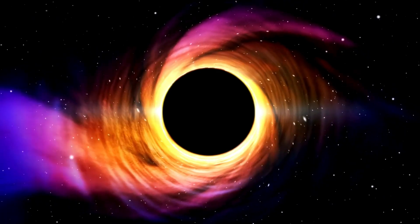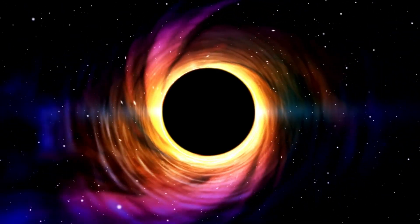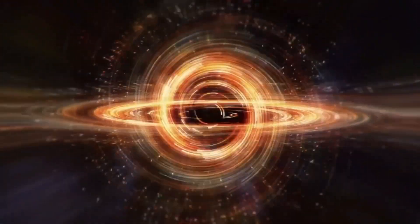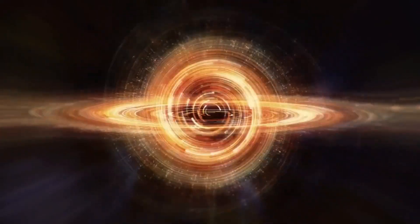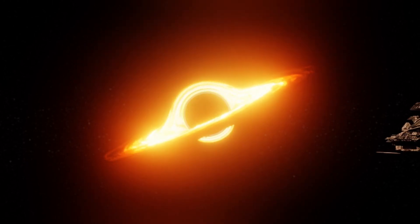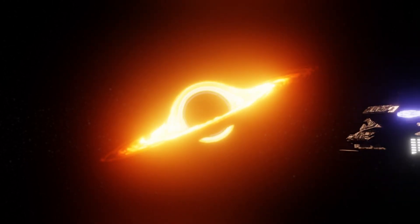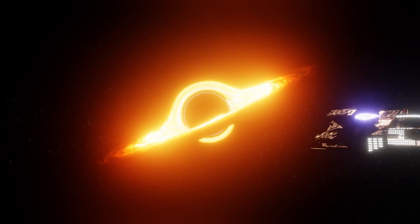In 1916, Albert Einstein published his theory of general relativity, which predicted the existence of black holes. At that time, black holes were purely theoretical. It took another 50 years for the scientific community to find evidence confirming their existence.